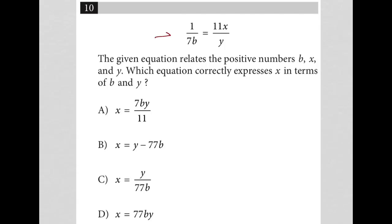So this question starts off by providing this proportion here: 1 over 7b equals 11x over y. I can obviously cross multiply if I wanted to. Let's just do that.